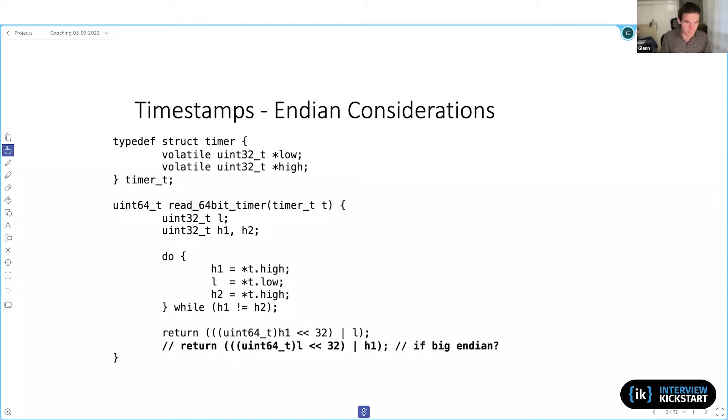Just to give a bit of an overview of what's going on here, there's a function called read 64-bit timer. And an input to that function is essentially a vtable, if you will, a set of pointers that refer to volatile low and high bits for the current timer. So in this case, there's 32 bits for the low side, 32 for the high side, so we have 64 bits in total for this timestamp.